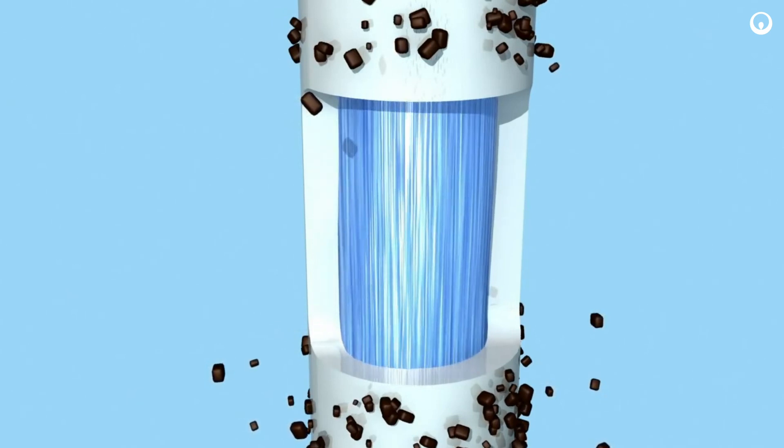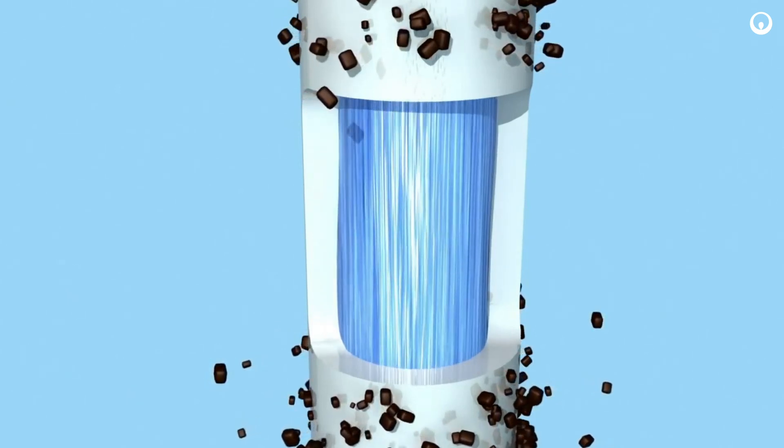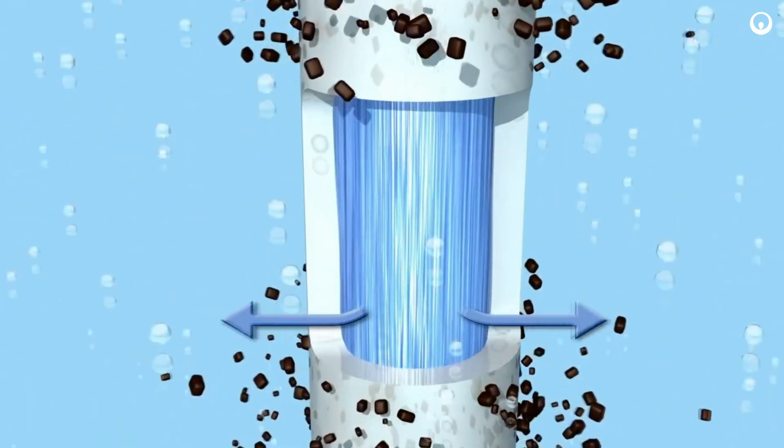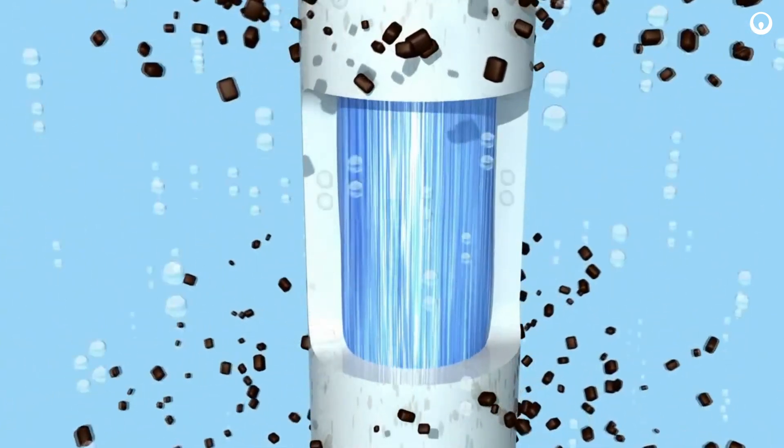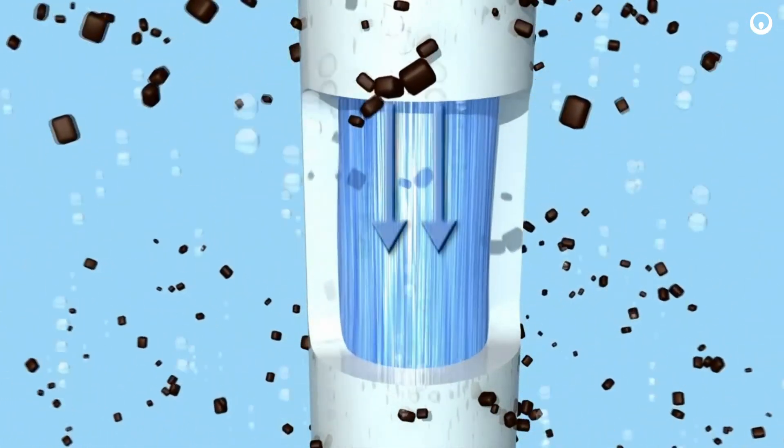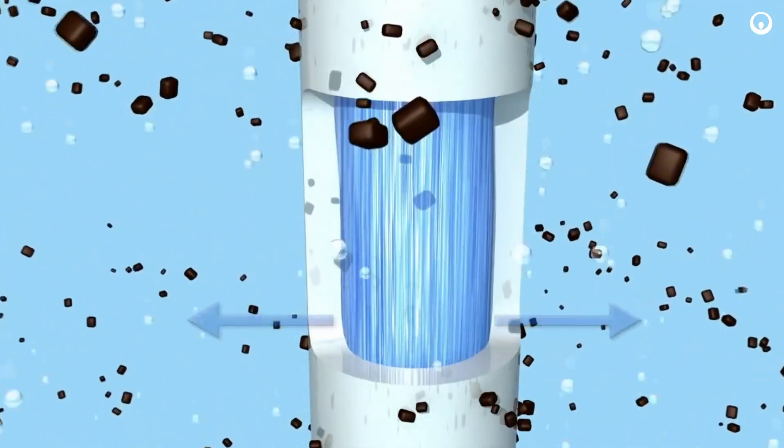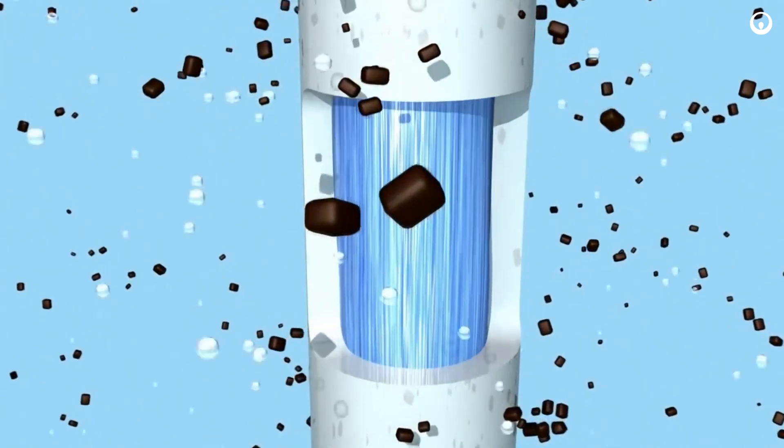Periodically, filtrate flow will be reversed in a backwash operation to dislodge particles from the membrane surface. During backwash, aeration is initiated to keep the particles in suspension and the membrane tanks are drained to discharge the concentrated water.